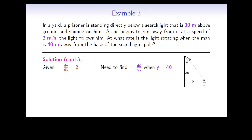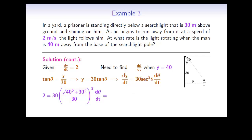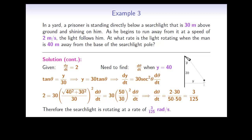We now need to find a relationship between the quantities involved. Looking at our picture, we can use trig to find this relationship. Specifically, tangent of theta should equal y over 30. Rearranging, this tells us that y should equal 30 times tan theta. We can now differentiate this expression with respect to t, getting dy/dt is equal to 30 secant squared theta times d theta/dt. We can now substitute in the known quantities and solve for d theta/dt. After some rearranging and simplifying, d theta/dt should equal 2 times 30 over 50 times 50, or 3 over 125. So we conclude that the searchlight is rotating at a rate of 3 over 125 radians per second when the man is 40 meters from the pole.